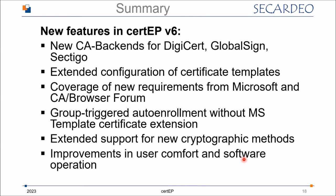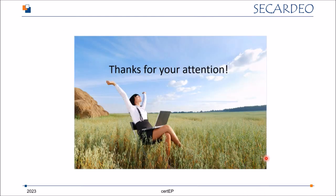To summarize the new features: new CA backends for DigiCert, GlobalSign, and Sectigo; extended configuration of certificate templates; coverage of new requirements from Microsoft and the CA Browser Forum; a server-based or group-triggered auto-enrollment feature for CAs that don't support the template certificate extension; support for new crypto methods including CAPI2, elliptic curves, SHA-2, and AES; and a range of improvements for user comfort and better software operation. Thank you very much for your attention.